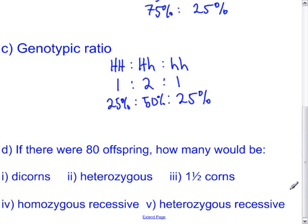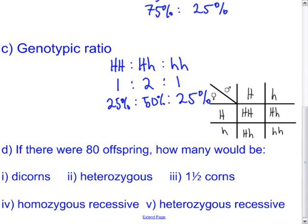For the offspring numbers question: with 80 offspring, it's useful to divide among the four Punnett square boxes. 80 divided by 4 equals 20 in each box. Referring back to the Punnett square, how many will be dicorns? Dicorns appear in only one box, so the answer is 20.